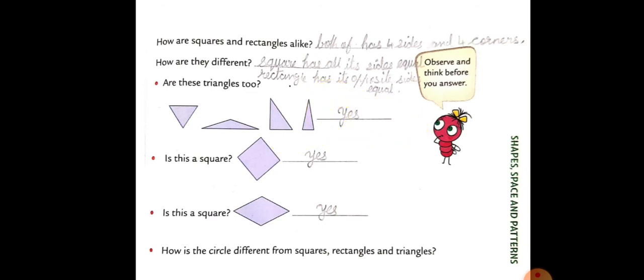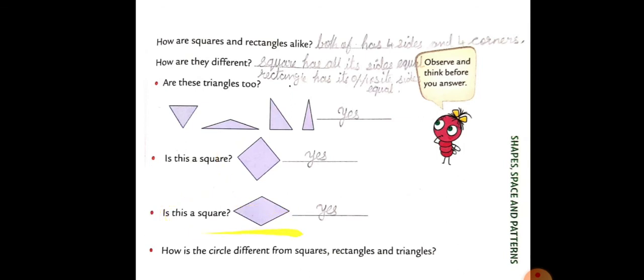Is this a square? Yeh square hai? Yes — par yeh thoda tilted square hai, par hai square. Yes.